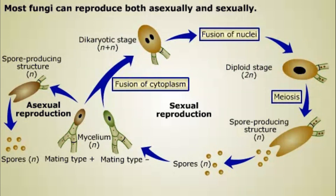The diploid stage, which may be brief, is followed by a meiosis step that leads to the formation of genetically diverse haploid spores.